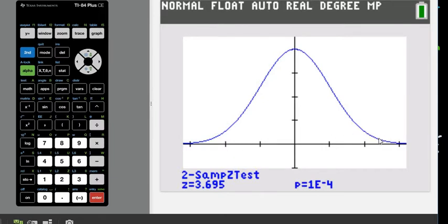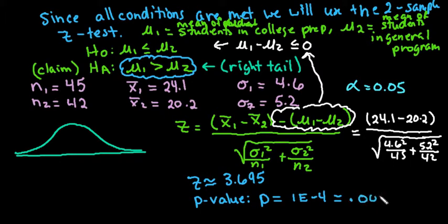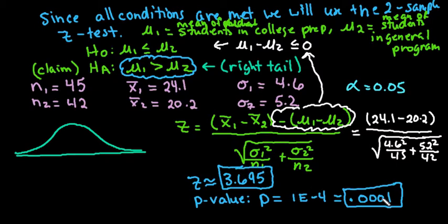When you draw the result, you can see that almost nothing is shaded in the right tail. The calculator shows our p-value is 1e-4, which is the calculator's scientific notation for 1 times 10 to the negative fourth, meaning 0.0001. Our z-score is 3.695 and our p-value is 0.0001 — this is extremely unlikely to occur by chance if there were truly no difference between the two groups.